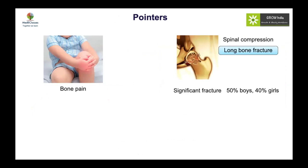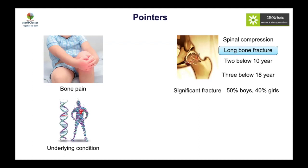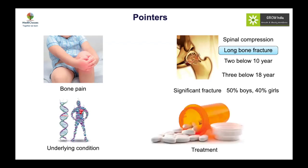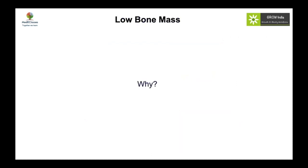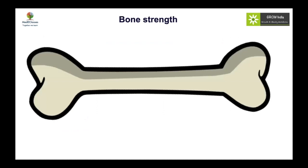A significant fracture in children is defined as a spinal compression fracture, or two or more long bone fractures before 10 years of age, or three or more fractures below 18 years of age. This is the most important criterion before ordering a DEXA, as there are many pitfalls if not done properly. Of course, if there is an underlying condition or the patient is on steroids, a DEXA may be warranted.